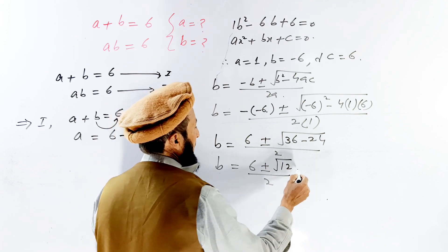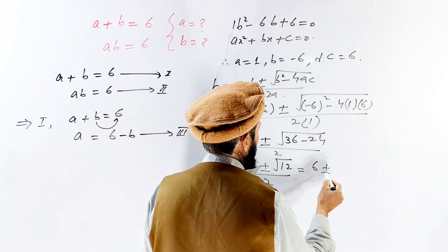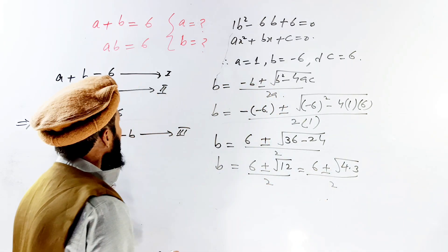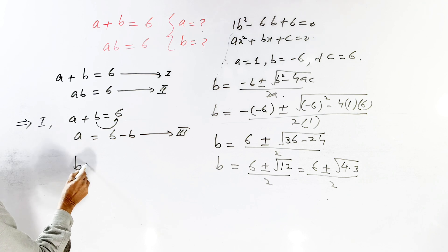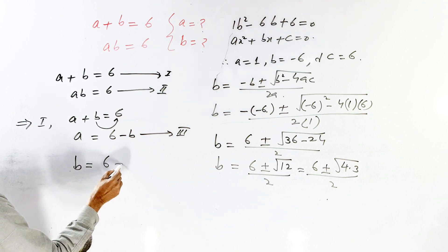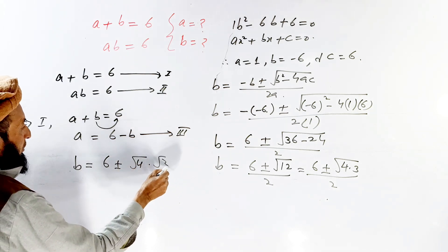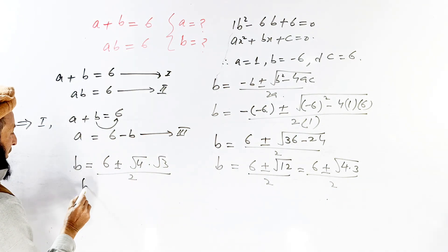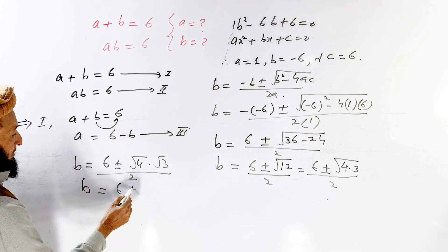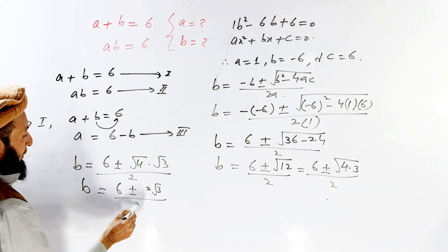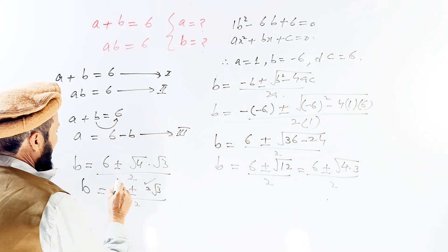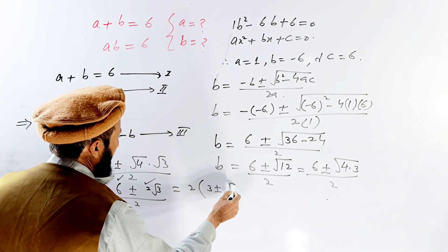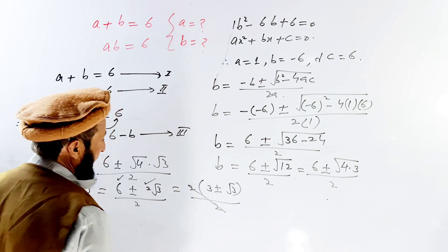36 minus 24 gives us 12, so we have the square root of 12 divided by 2. We simplify: square root of 12 equals 2 times square root of 3, using the property of square roots. So B equals 6 plus or minus 2 root 3, divided by 2. Since 2 is common, we cancel to get B equals 3 plus or minus root 3.